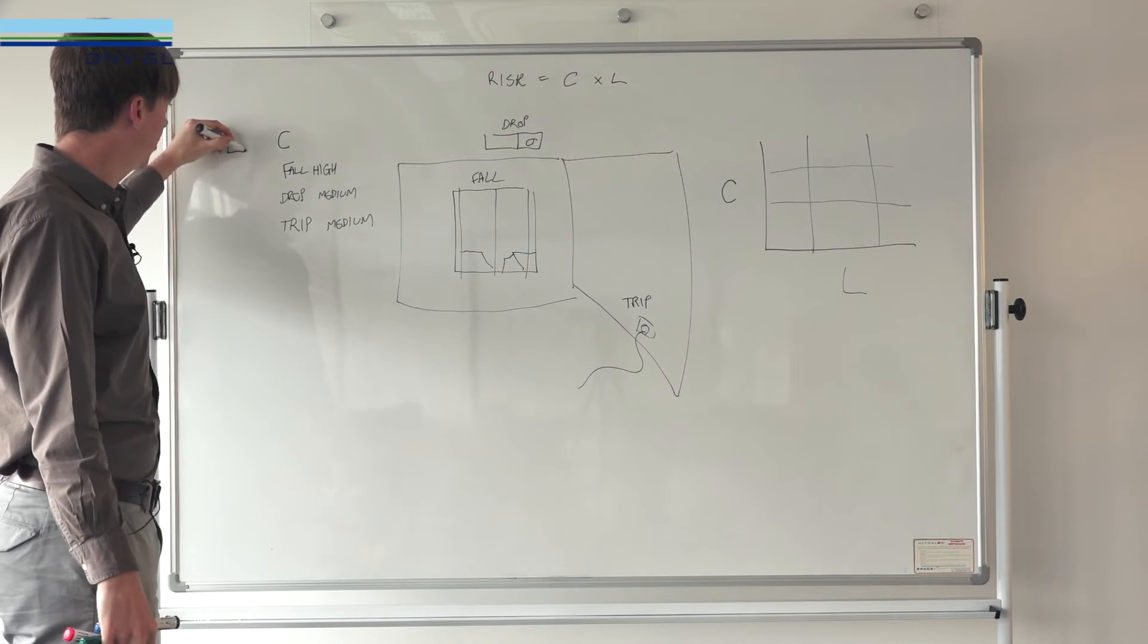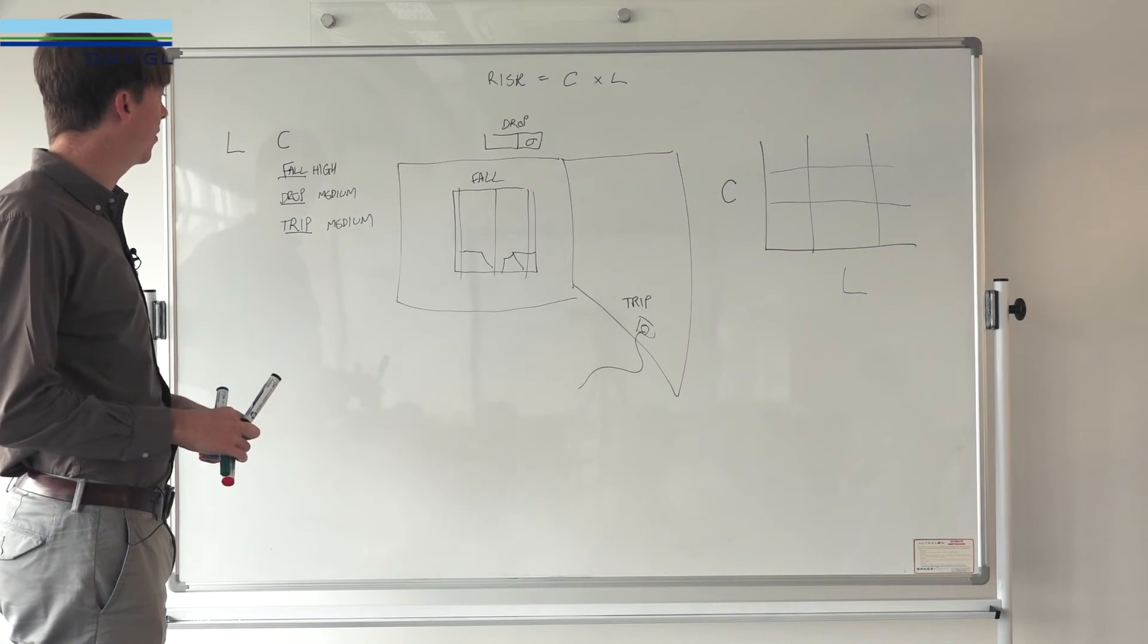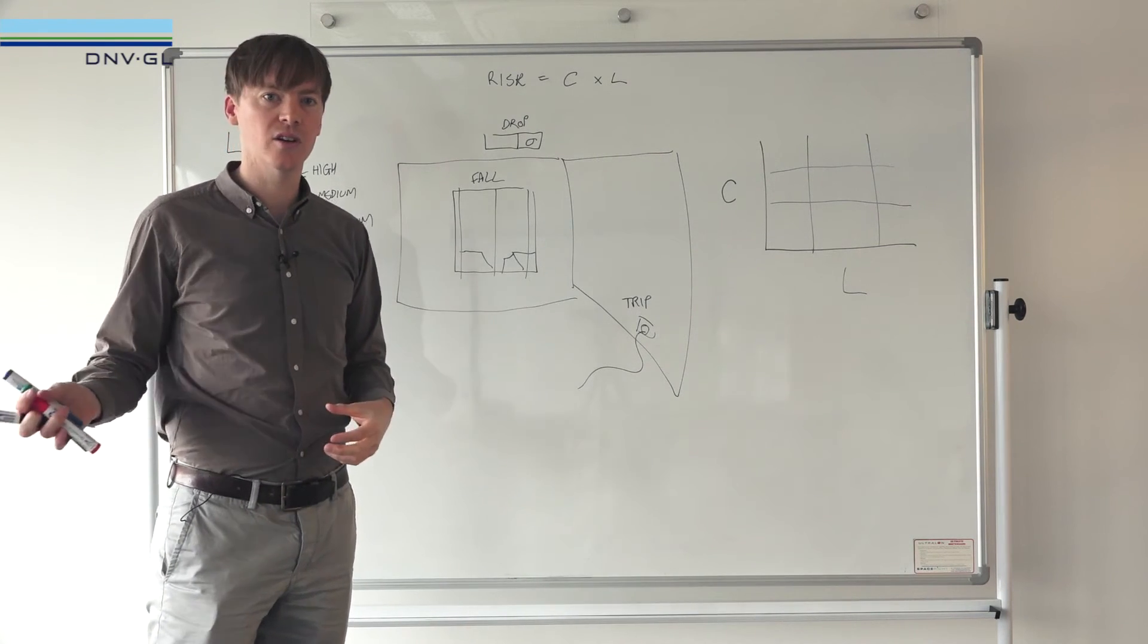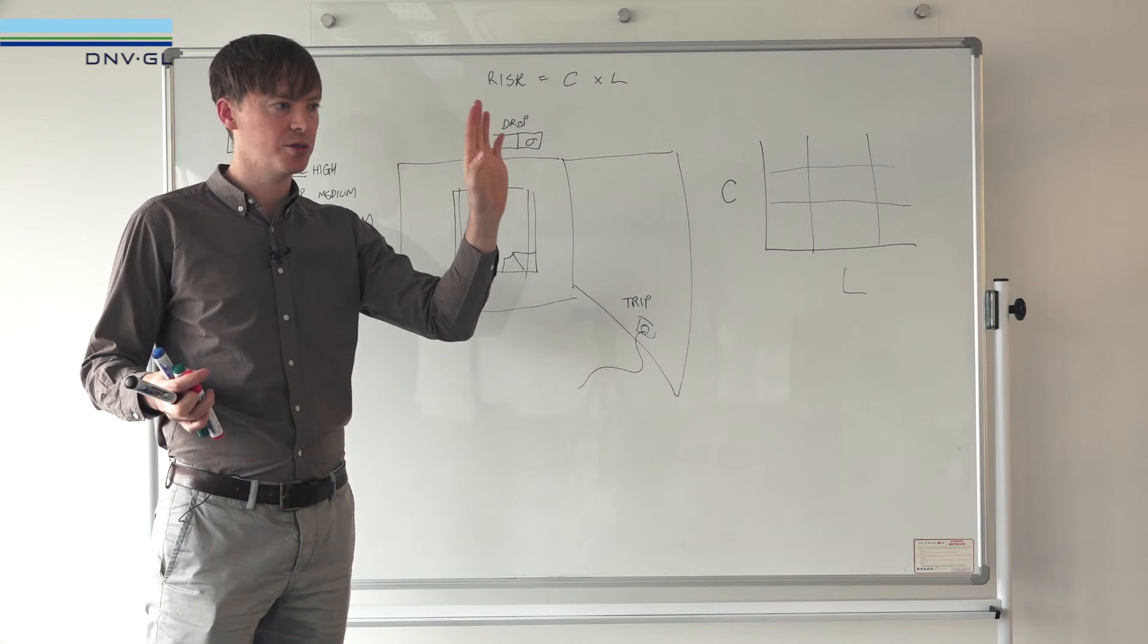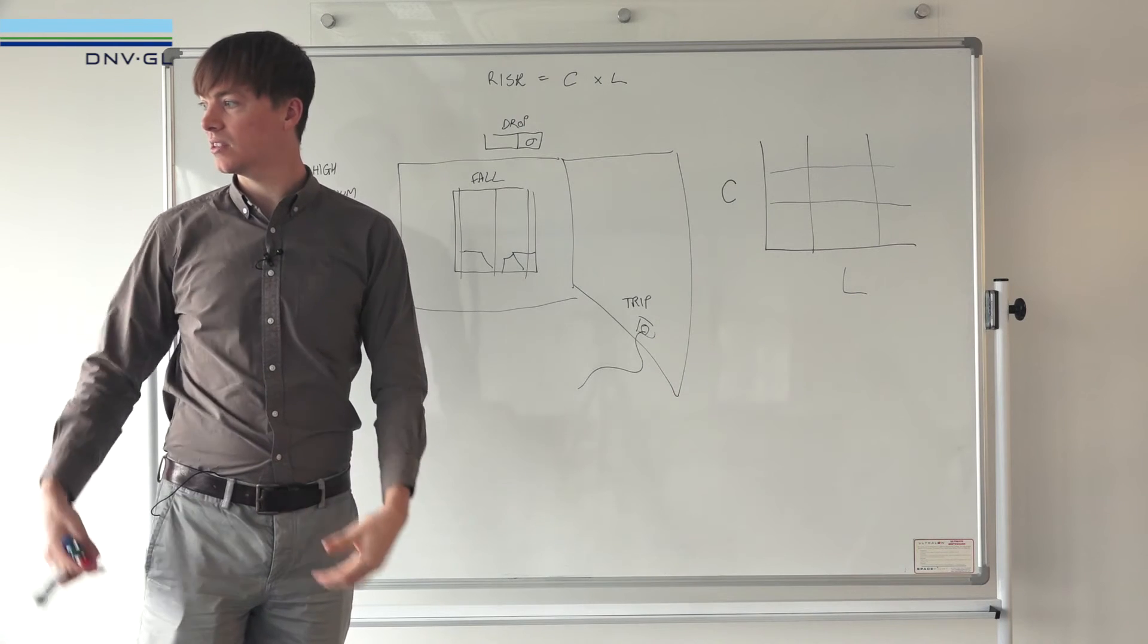Let's make a quick list of the likelihood of these three undesirable events. Falling from the window - actually the likelihood is pretty low. Even without the thing that stops you opening the window too far to actually get a body through, the window ledge is above waist height.